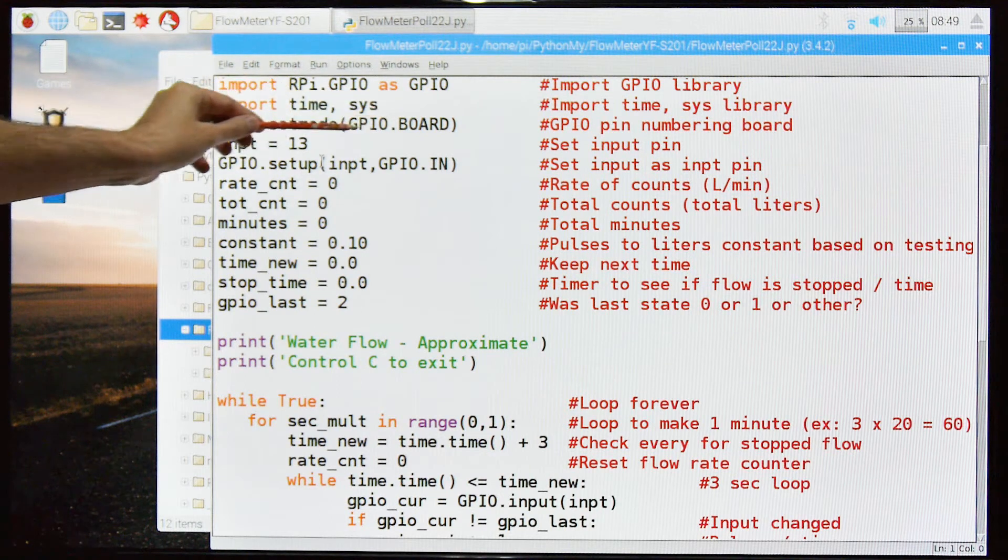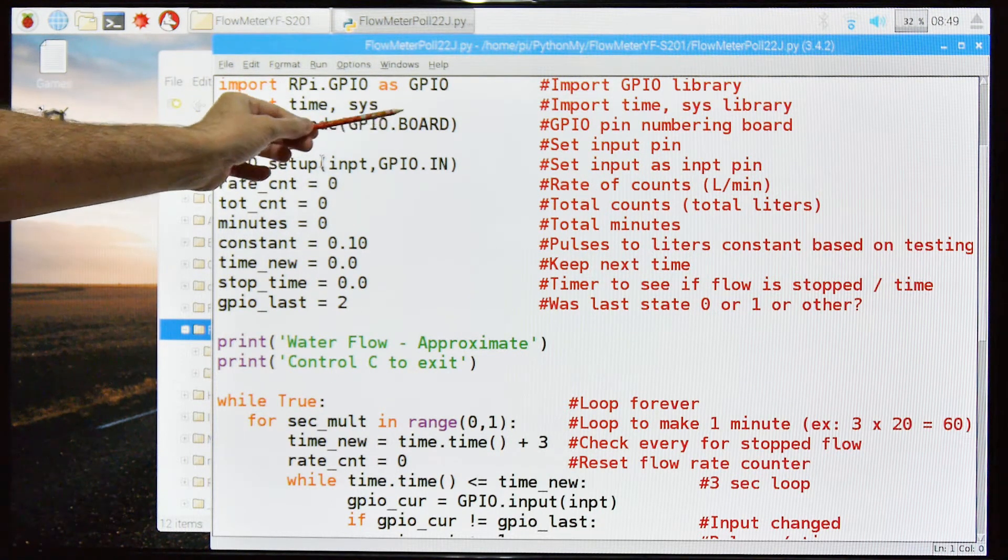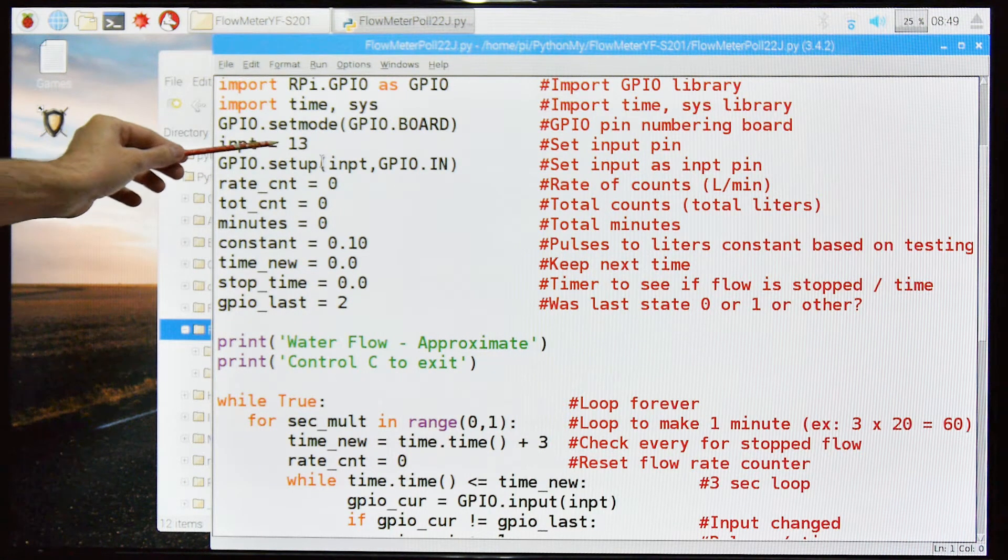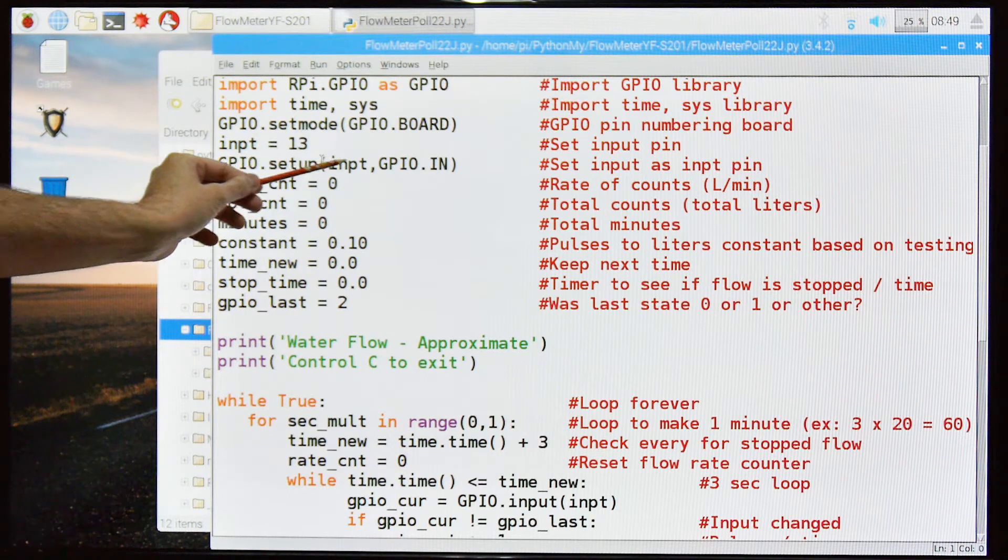We import the GPIO library. We import time and sys. We're going to set mode to GPIO board. We're going to use board numbering. Input is on pin 13 and here we set pin 13 to input.